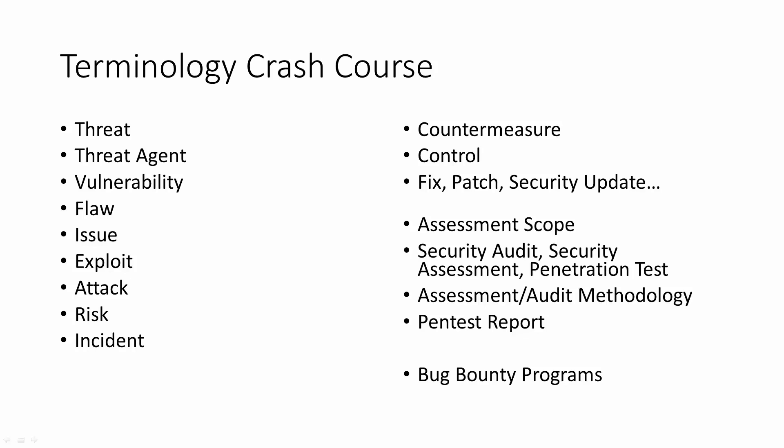Then we have positive things that affect the security posture: countermeasures or controls, which can be of three basic types — physical, logical (also known as technical), and organizational. These controls are aimed at lowering the risk. They either decrease the probability of an incident happening, or they limit the impact, or they do both to some extent. A countermeasure or control is a way to limit and lower the risk.